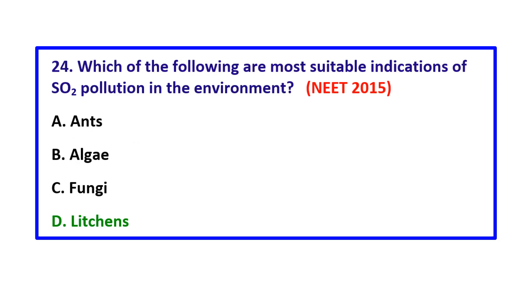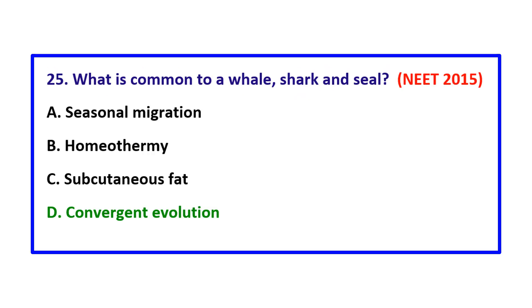Question: Which of the following are most suitable indicators of SO2 pollution in the environment — the correct answer is lichens.